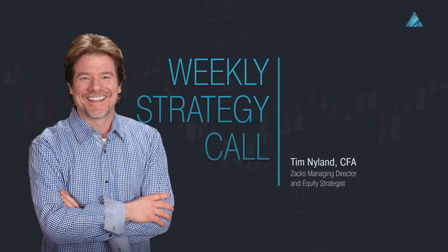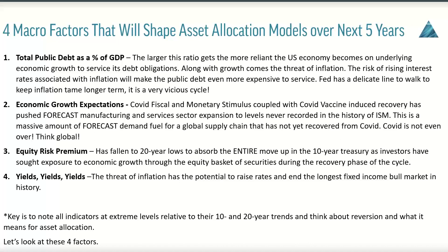Let's go ahead and get started with the four macro factors. These are the four factors that are definitely going to be shaping the asset allocation models that you're currently using over the next five years, whether you like it or not. The concept of total public debt as a percent of GDP is massive — it's a very vicious cycle that the Fed is wrestling with, and it has implications across all asset classes. All four of these macro factors are very much related. Point number two is economic growth expectations, which is a massive driver for the manufacturing and services sectors.